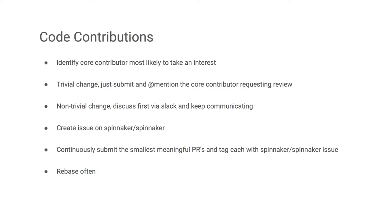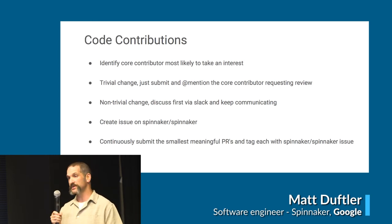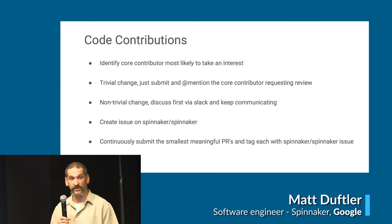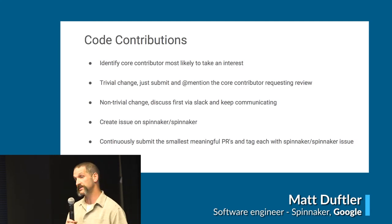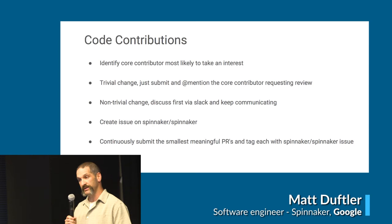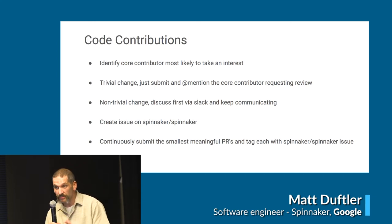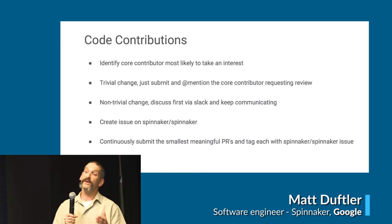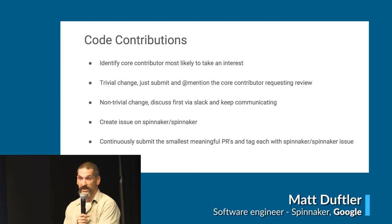For code contributions, they fall into two categories. For something trivial, just submit a PR - use git blame to figure out who to address it to. We all have way too much email, so identify somebody to direct the PR to. For a non-trivial change, the best bet is to strike up a conversation with the folks most likely interested in that area. Discuss it first, come up with a proposal - some things require a design doc. Get them on board, sell it a little, then start working on it. Create an issue on the Spinnaker repo and start pushing code.